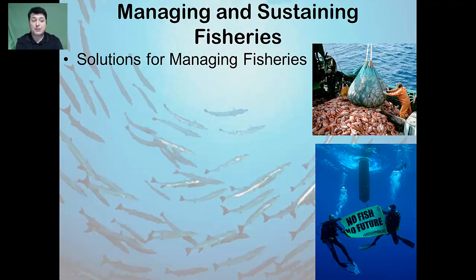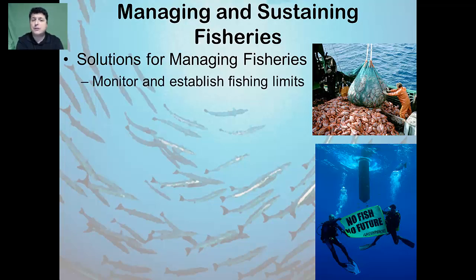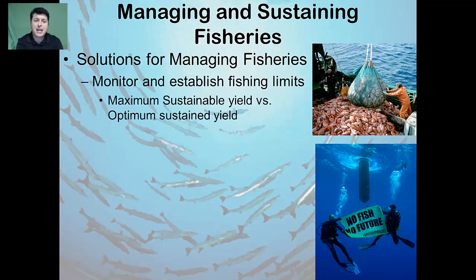There are many solutions for managing fisheries so that we can have fish stocks into the future. One solution is to monitor and establish fishing limits. Fishery biologists have been working to provide accurate estimates of the maximum sustainable yield for target species. Maximum sustainable yield is the number of a species that could be removed from a stock of animals or plants without impacting the long-term stability of that population.